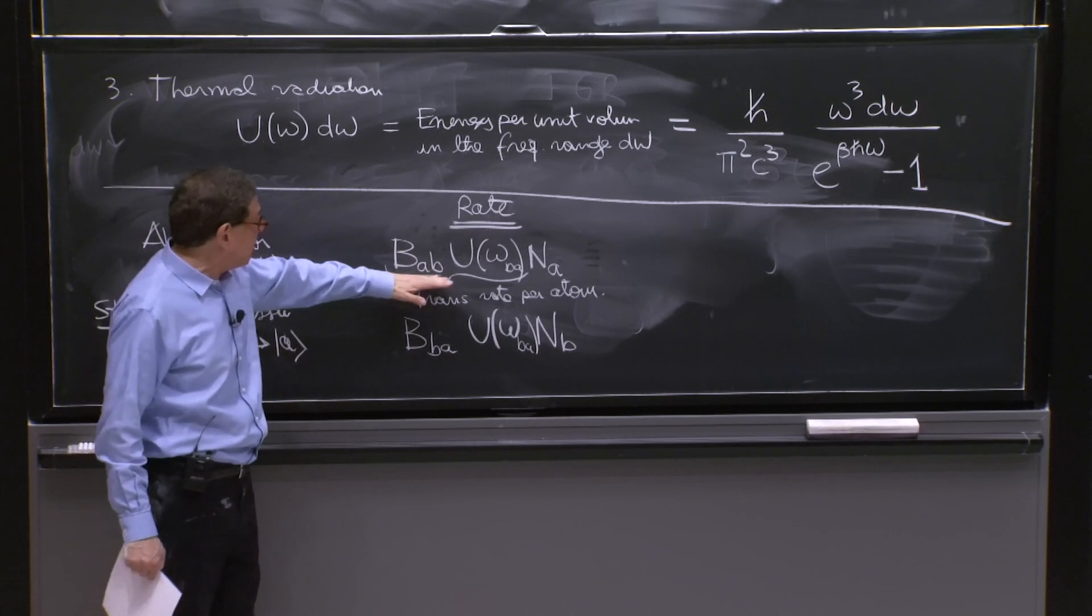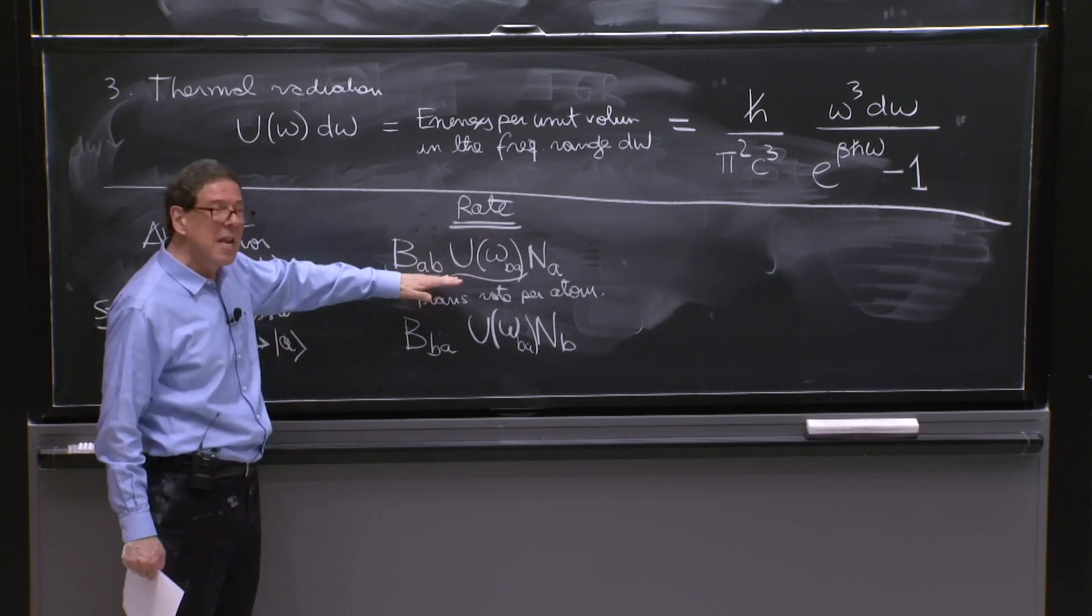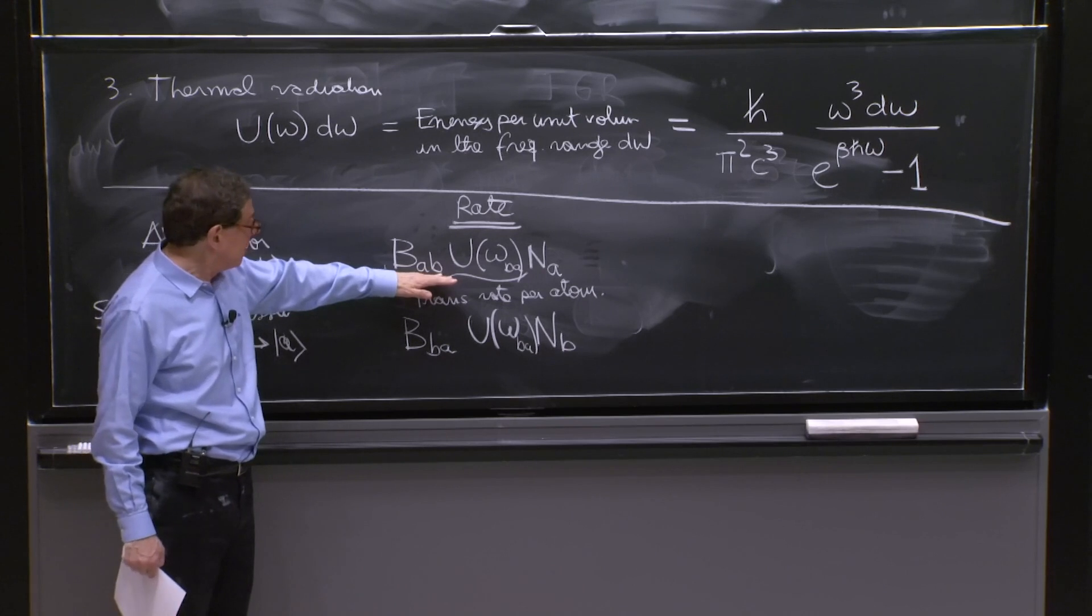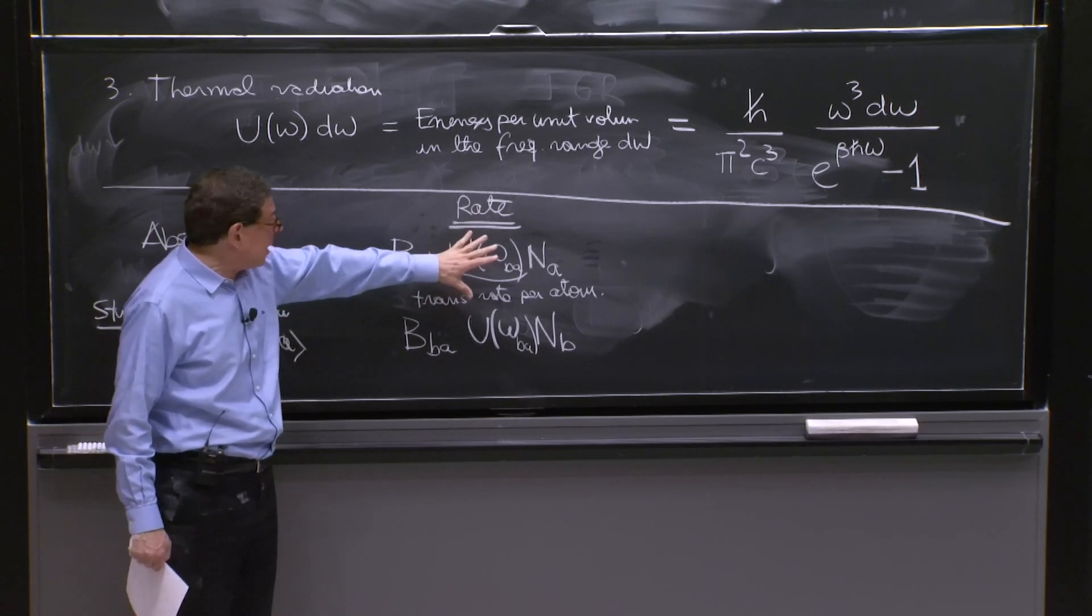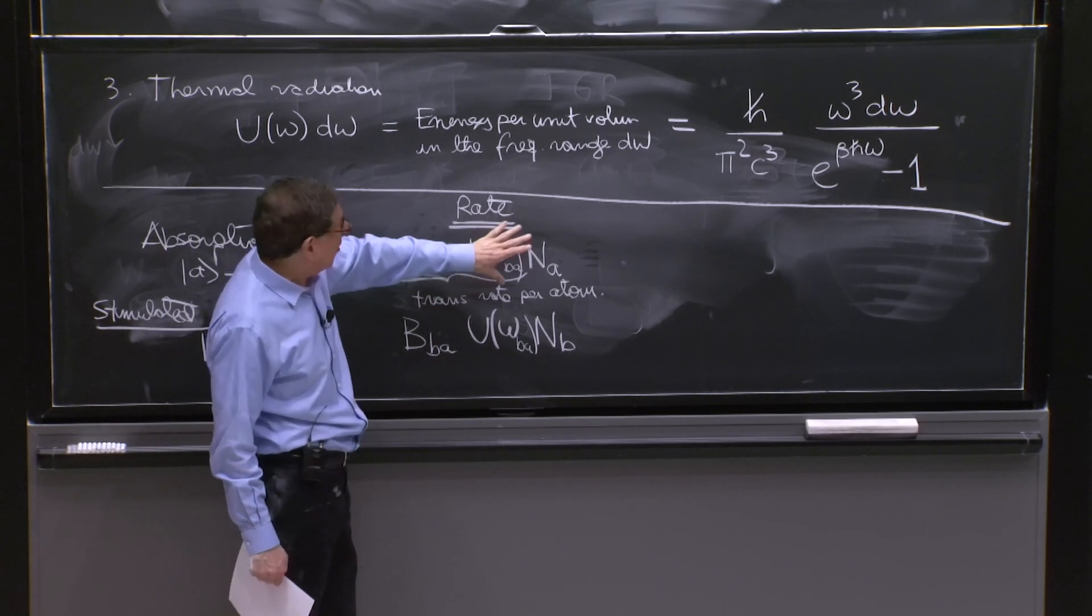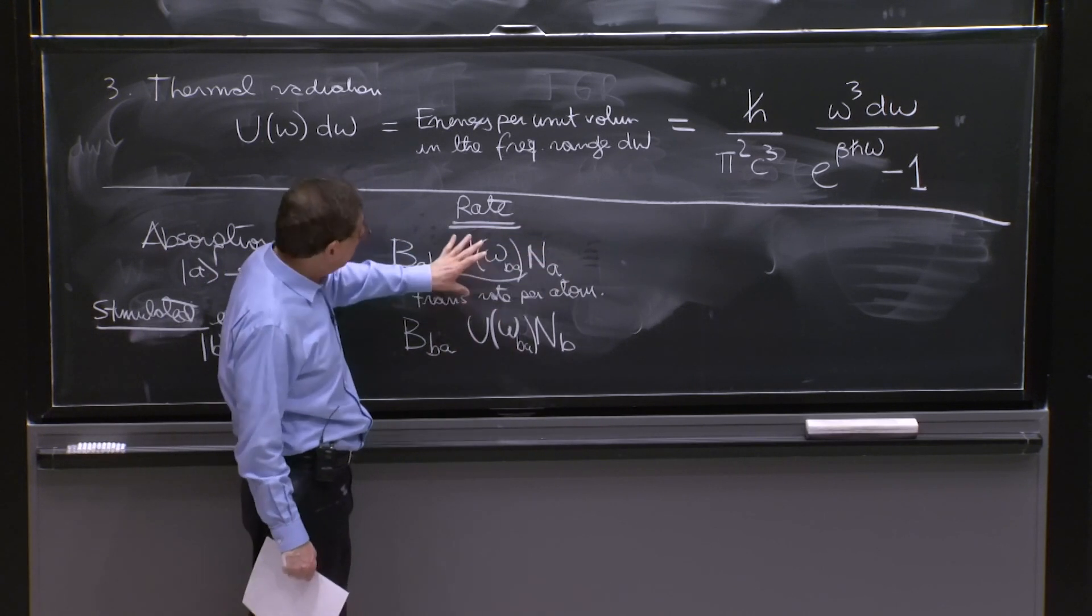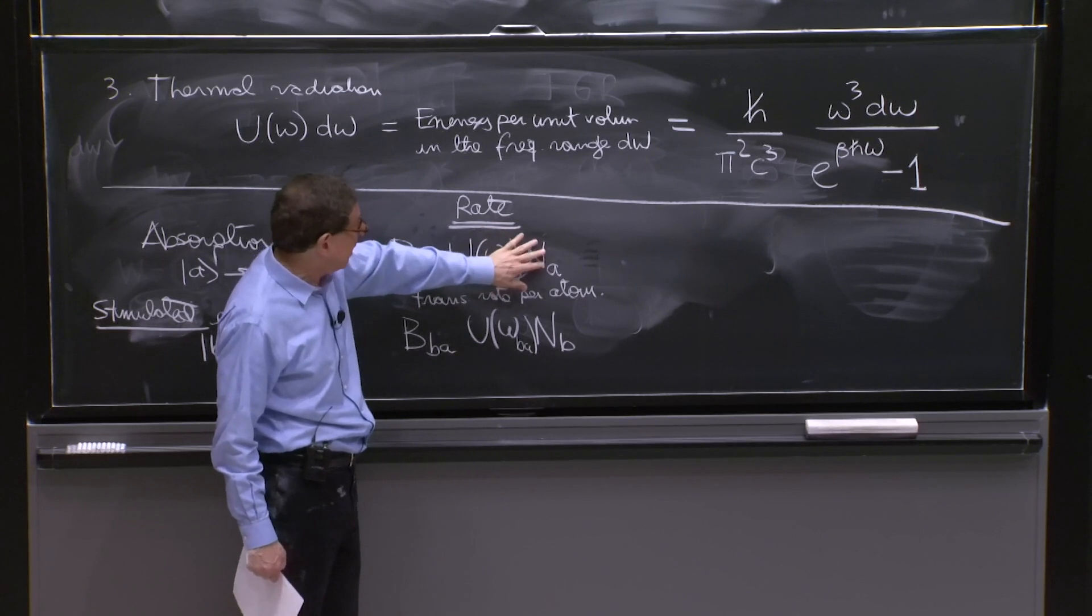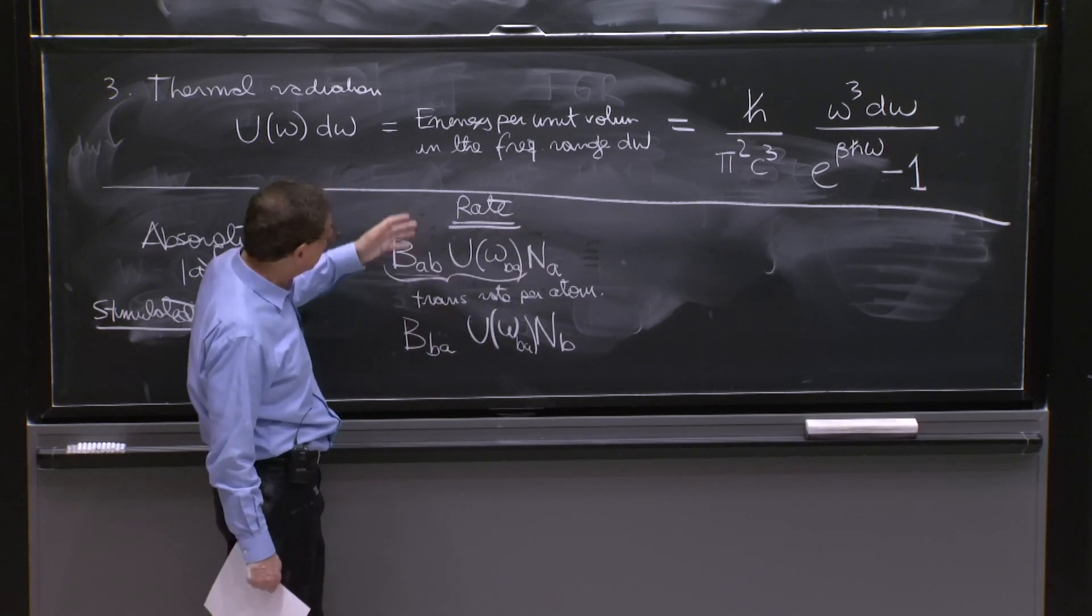These are properties of the geometry of those states and the overlaps of the wave functions. These are atomic physics properties of the levels of the particles. We will calculate them.